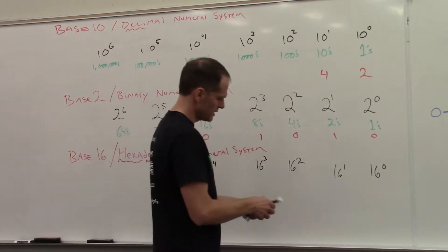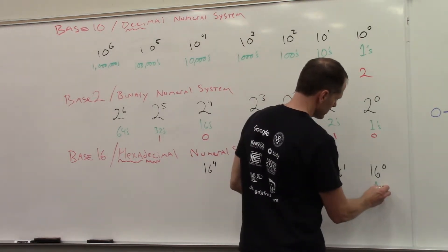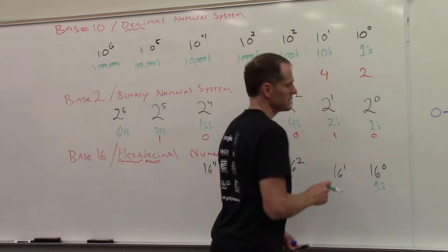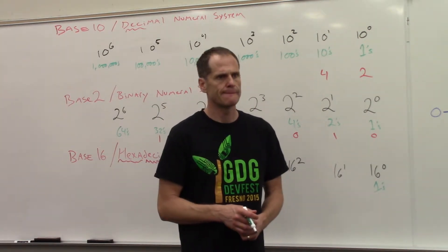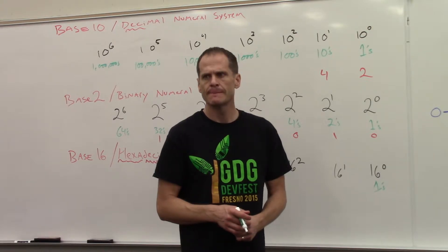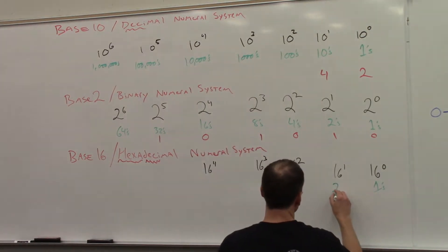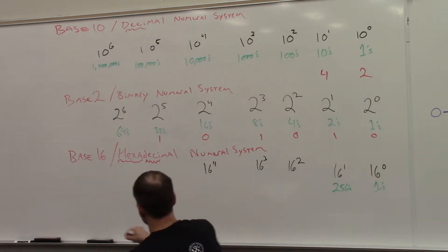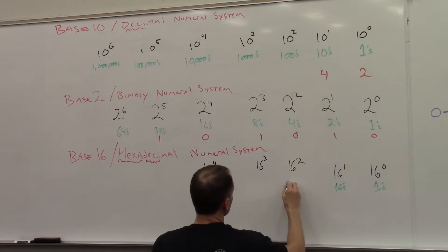And this is going to be the 1 spot. This is going to be, what, 16 times 16? What is it? 256. This is my 256. What's 16 to the 2nd? That's 16. 16s, 256s, what's 16 to the 3rd?